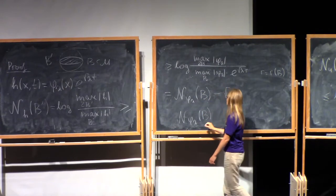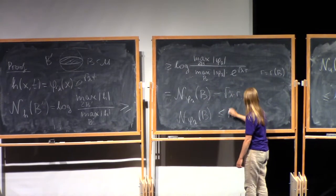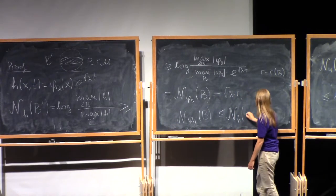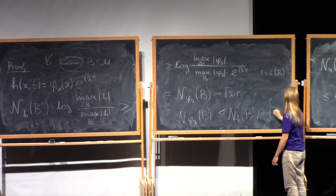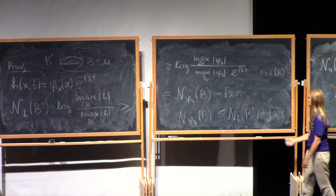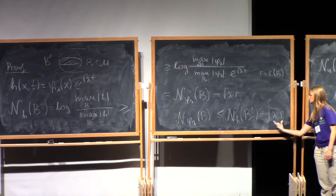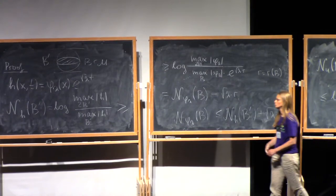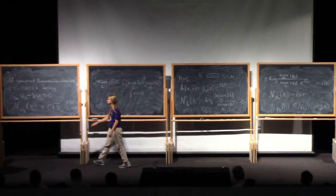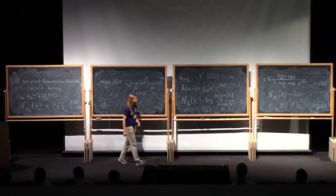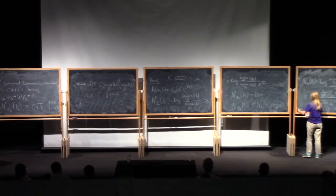So the doubling index for the eigenfunctions is bounded by the doubling index of its lift of the lifted ball plus term of order square root of lambda. So my r will be bounded, so this will be of constant times square root of lambda. So to prove the estimate, I need to bound the doubling index of the lifted function. And here we will use the fact that this is almost monotone.